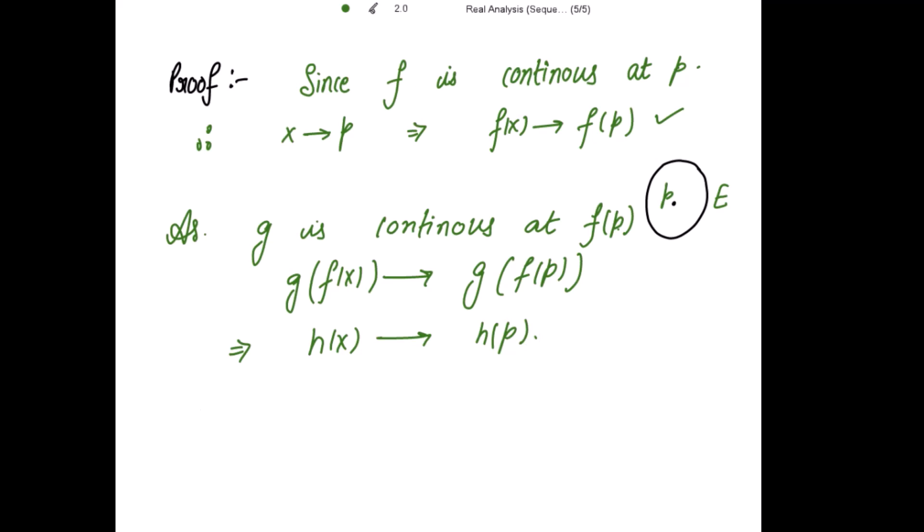So the proof is almost done from where we have started that x is tending to p and where we have reached that h(x) is tending to h(p). So writing this, since x is tending to p implies h(x) is tending to h(p). Therefore by the definition that limit x tends to p, h(x) is equal to h(p). Hence h is continuous at p. Thank you.